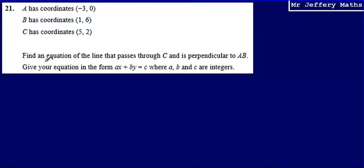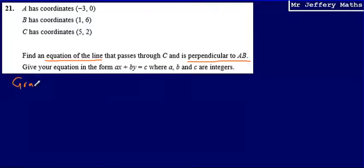In order to find the equation of the line which is perpendicular to AB, the first thing I need to do is work out what the gradient of AB is. So the first step is to find the gradient of AB. Once we have that, we can then find the gradient of the line perpendicular to AB.